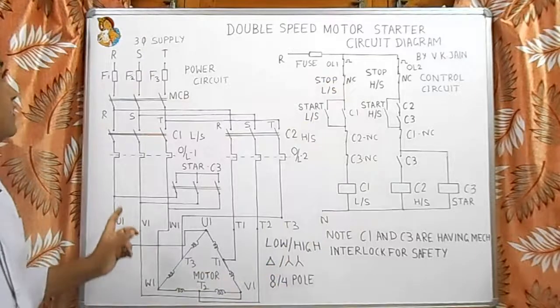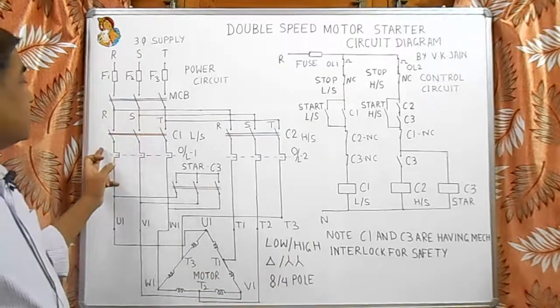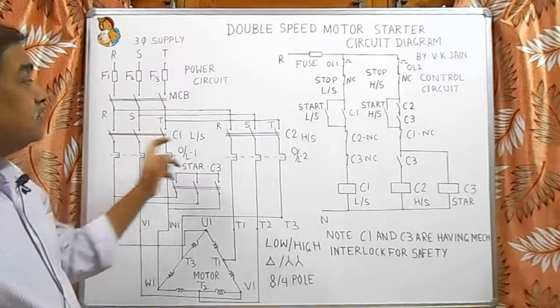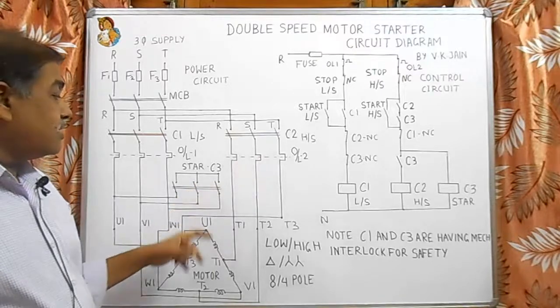In power circuit there is fuse, three phase fuse, MCB, C1 contactor for low speed, C2 contactor for high speed, and C3 contactor for star connection.